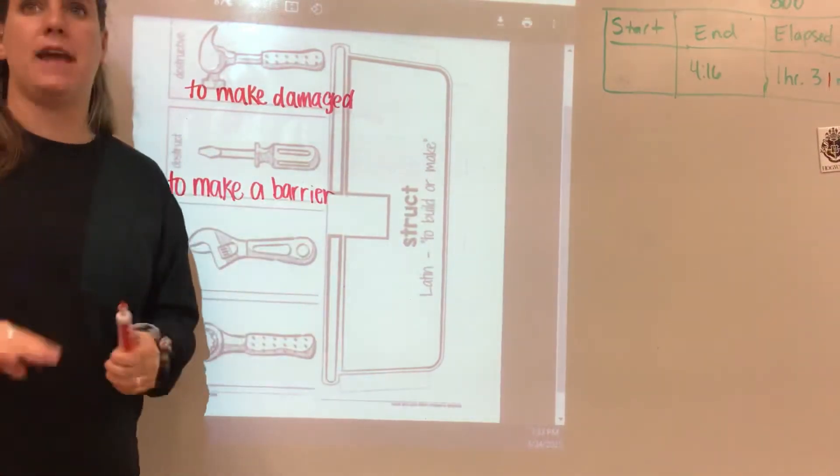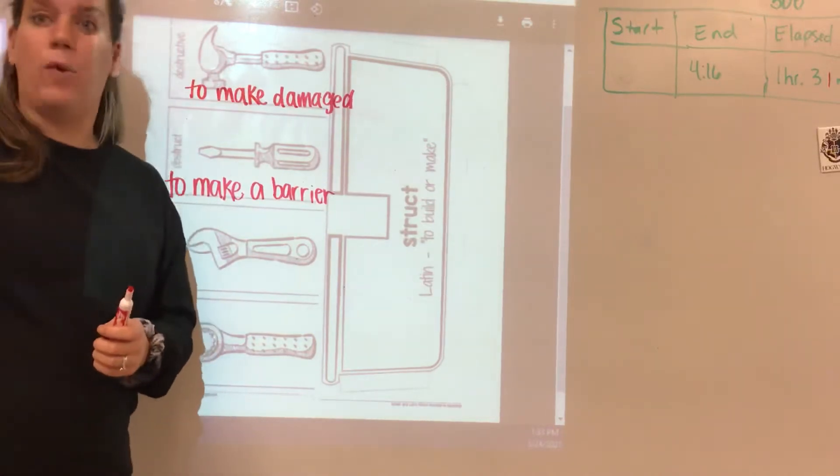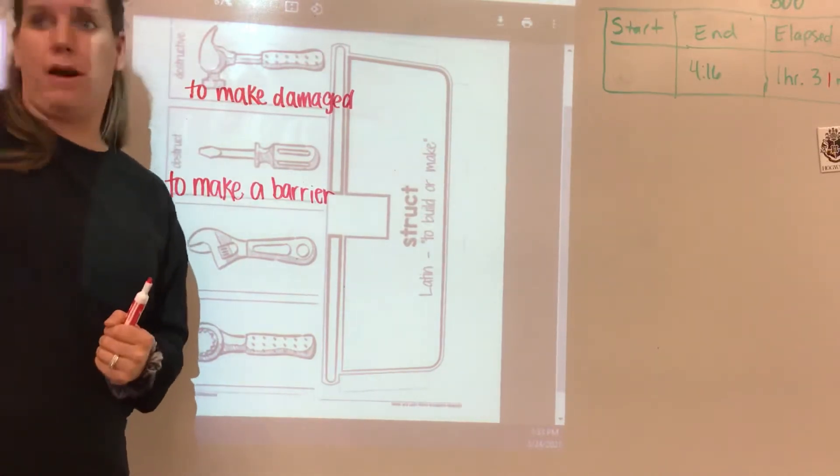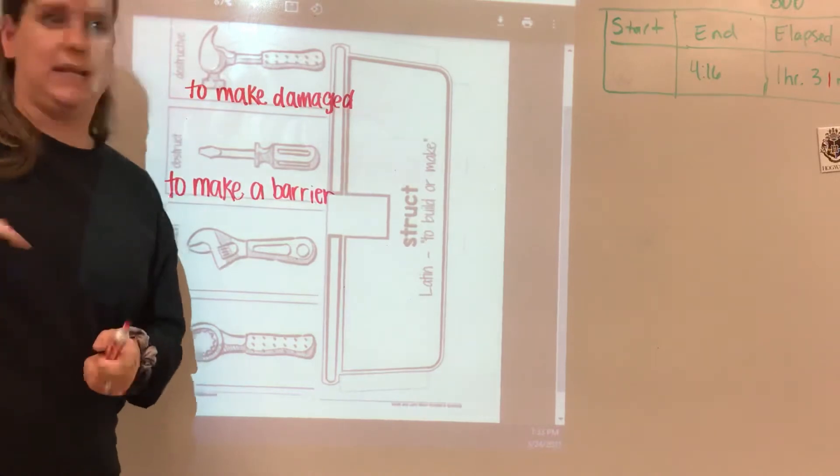Maybe you'll see somebody say, oh, it obstructs our view, meaning it's in the way. It's made, so it's a barrier. So you can't go there. You can't see something.